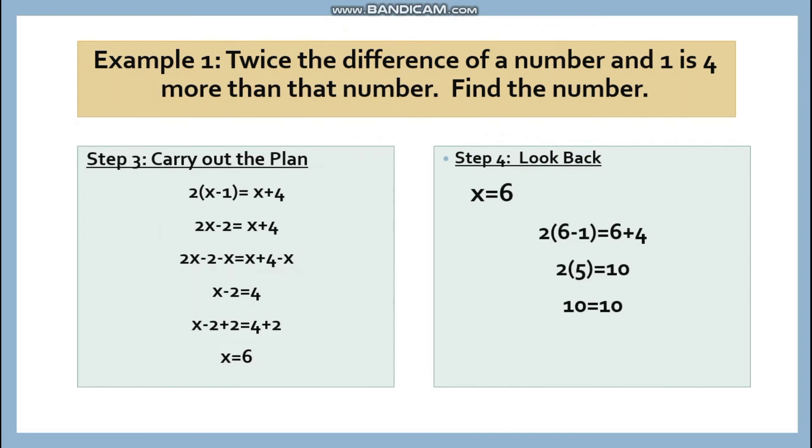Step four, look back or check and verify. X is equal to 6. Let's check if this is the correct answer. We have two times the quantity of 6 minus 1 is 6 plus 4. 6 minus 1, you have 5. 2 times 5, 10. Equal. That means, check the answer. Check. X is equal to 6.